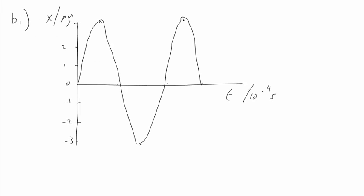In part B, we have a graph like this, and in part 1, we're to draw the variation of x2 with time t at point P. We're told that x2 has an amplitude of 1 micrometer, whereas x1 is 3 micrometers, and we're told it's 180 degrees out of phase.